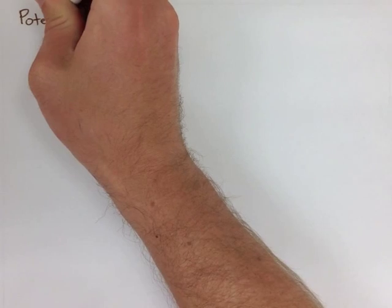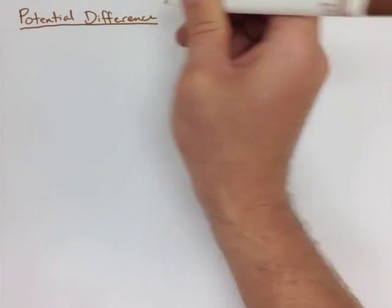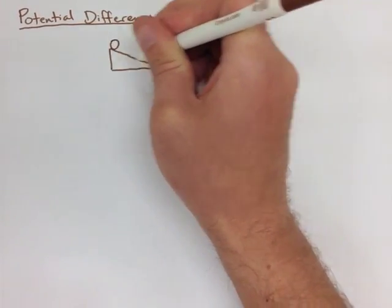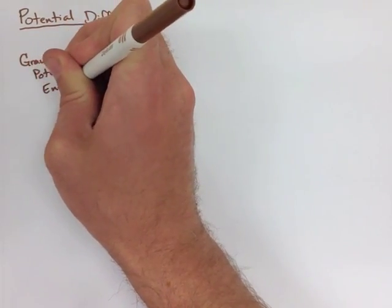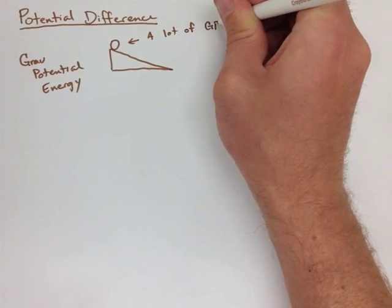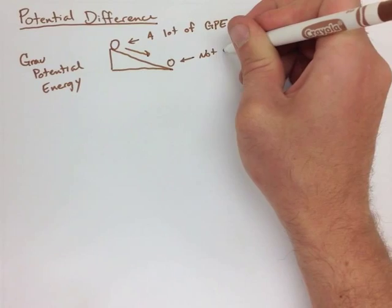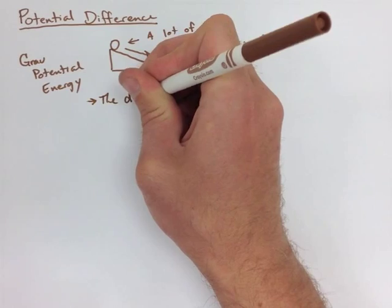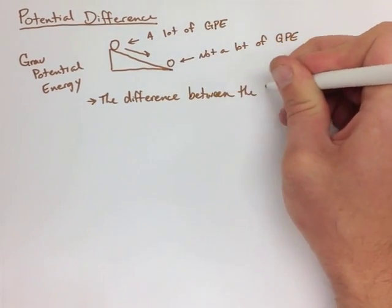When looking at potential difference, we're going to go back to looking at gravitational potential difference, or gravitational potential energy. Where we have a ball at the top of a ramp, which is going to have a lot of gravitational potential energy. The ball is then going to roll down that ramp, and at the bottom, it's not going to have a lot of gravitational potential energy. It's lost that potential energy. Now the difference between the two potentials, well that's the potential difference of energy.